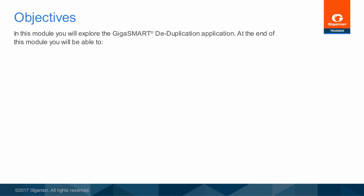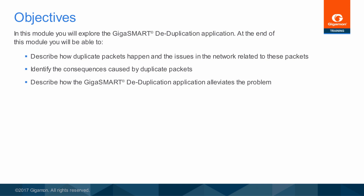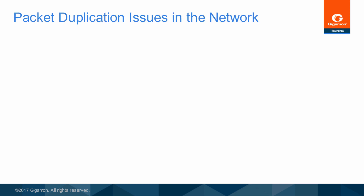At the end of this module, you will be able to: describe how duplicate packets happen and the issues in the network related to these packets; identify the consequences caused by duplicate packets; describe how the GigaSmart deduplication application alleviates the problem; and identify the use cases for the GigaSmart deduplication application.